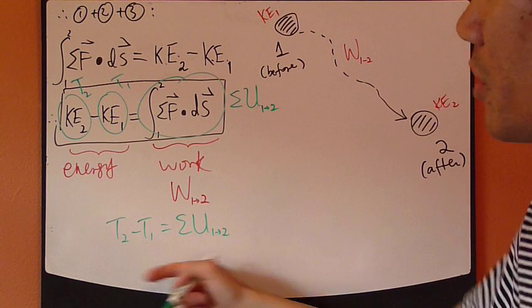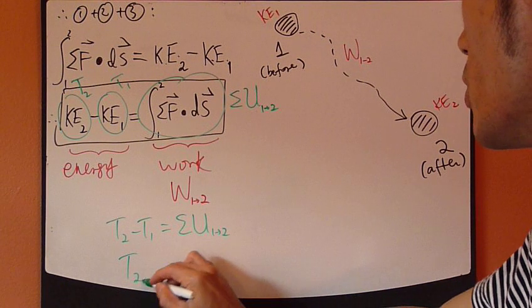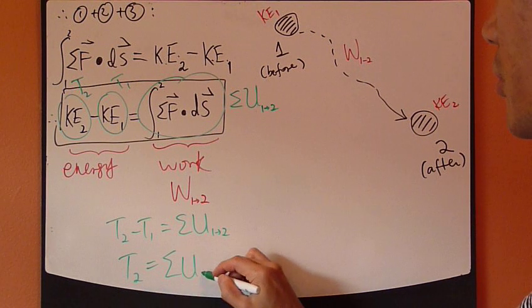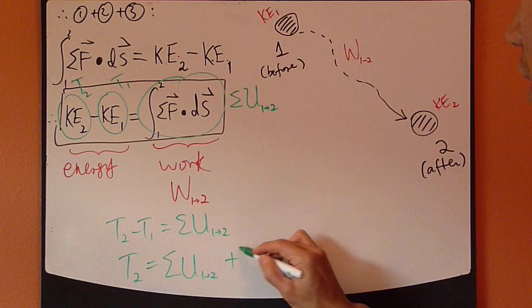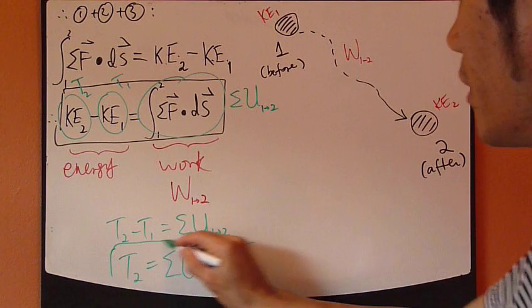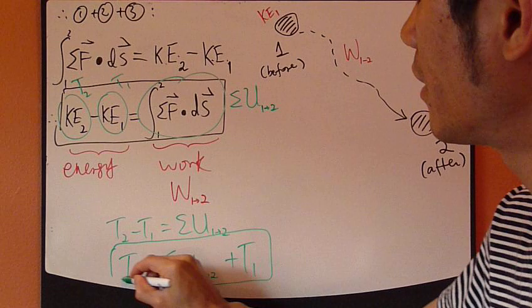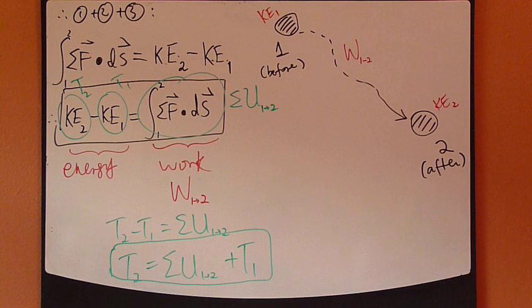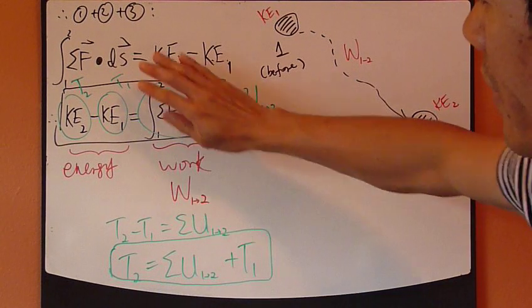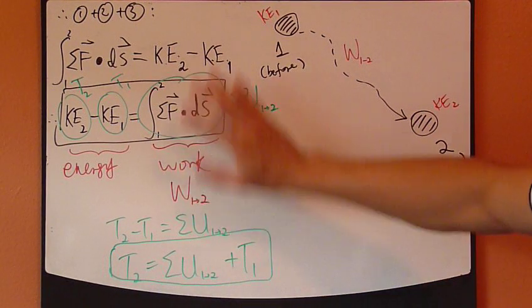And then you rewrite a little bit. This becomes T2 equals sum of U12 plus T1. So this is the textbook notation, but it's the equivalent.